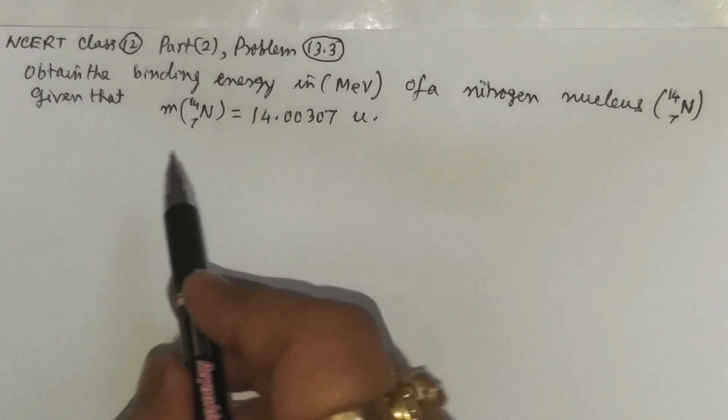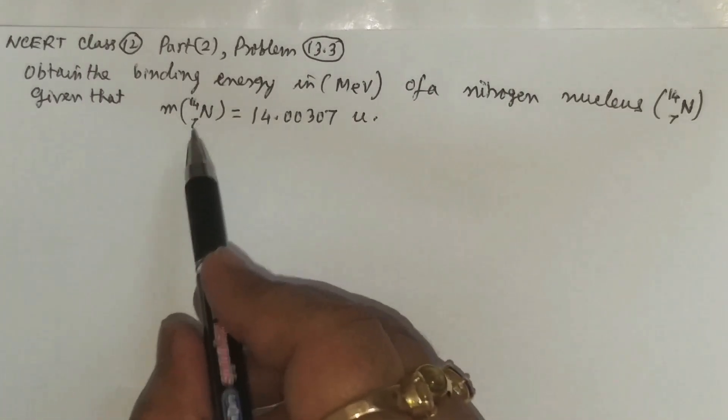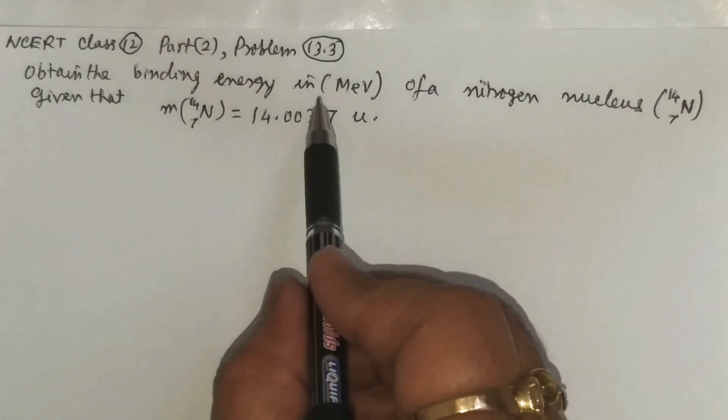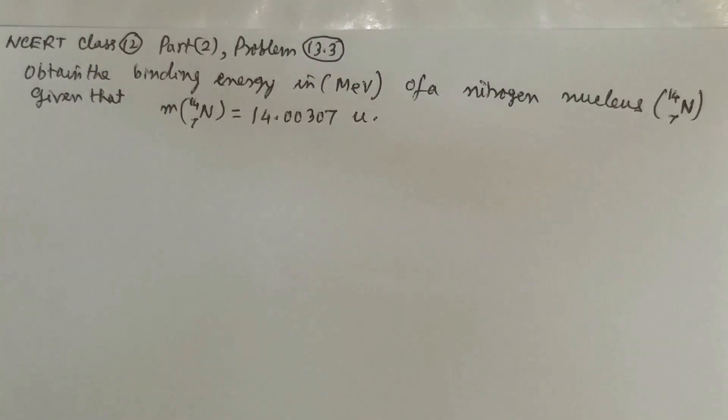It is asked that there is nitrogen-14 isotope and obtain the binding energy in million electron volts or mega electron volts of this nitrogen nucleus.